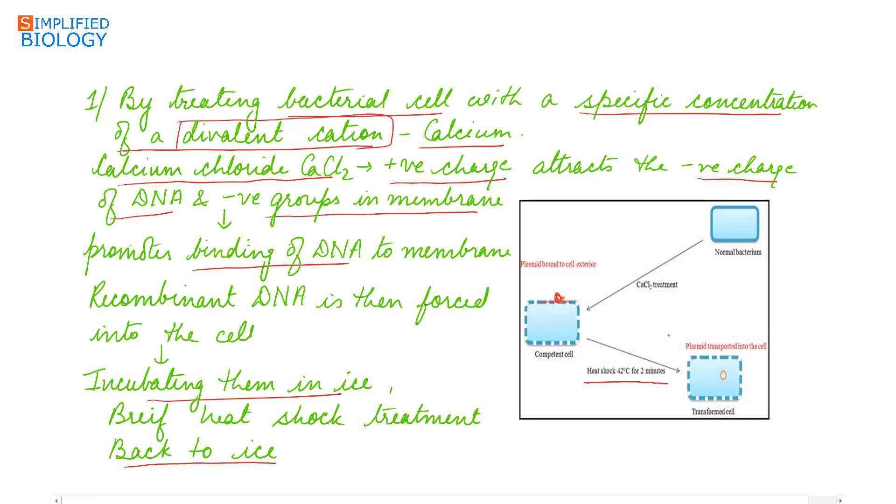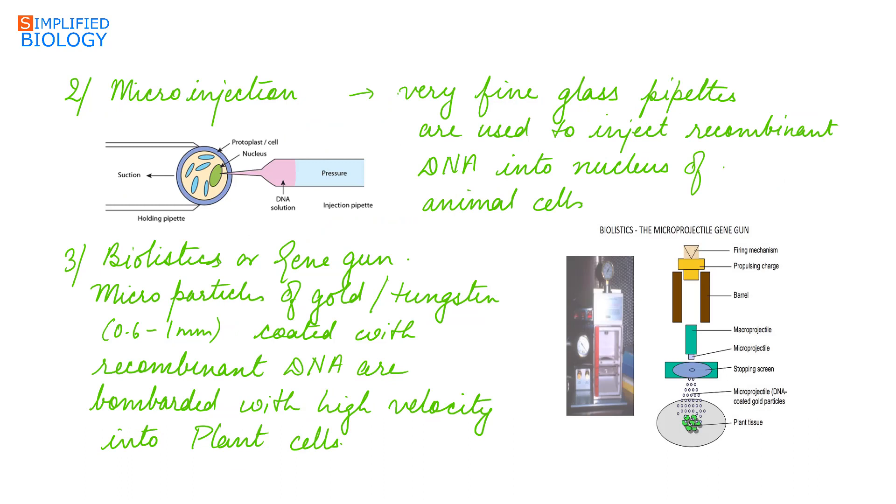Now this forces the recombinant DNA to enter into the bacterial cell or into the host cell. Another method of vectorless gene transfer is micro injections. Very fine glass pipettes, they are used to inject the recombinant DNA that is present in it into the nucleus of the animal cells.